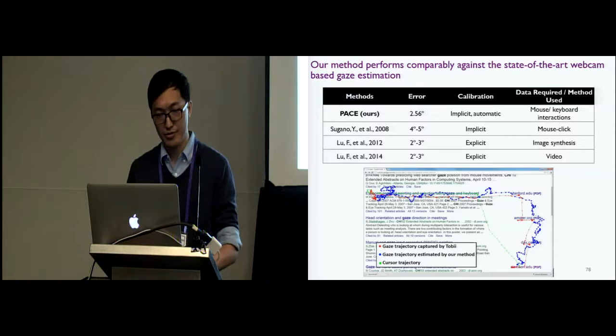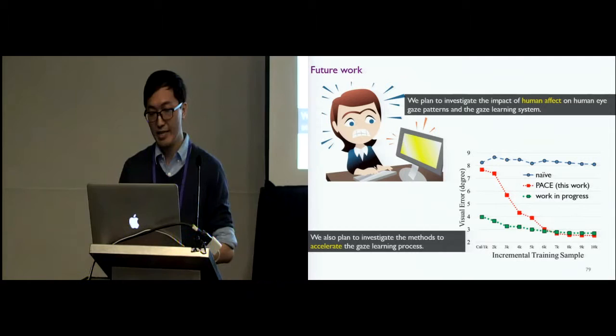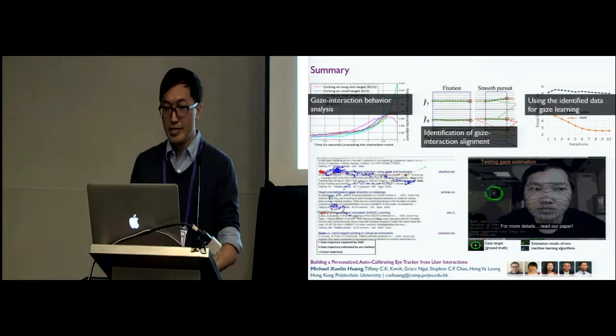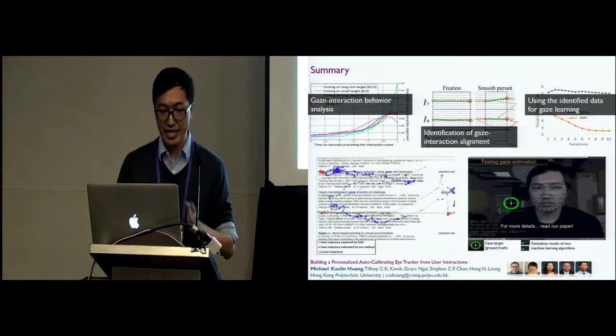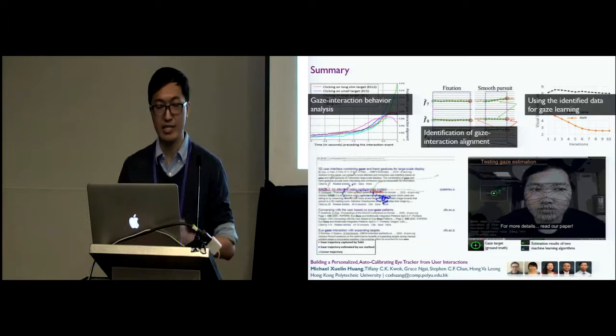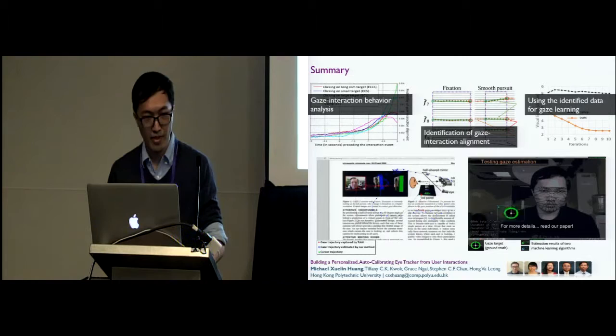So for future works, we plan to take into account the impacts of human affect. We also plan to investigate a method to accelerate the gaze learning process, as this is currently our major limitation. In summary, we conduct a user behavior study to investigate gaze interaction consistency across different interactions, and we propose a non-intrusive, adaptive, interaction-informed method to identify the gaze interaction alignment from daily human-computer interactions. We also show that our method is effective across diverse interactive tasks. Okay, I think that's it. Thank you for your attention, and I'm happy to take any questions.